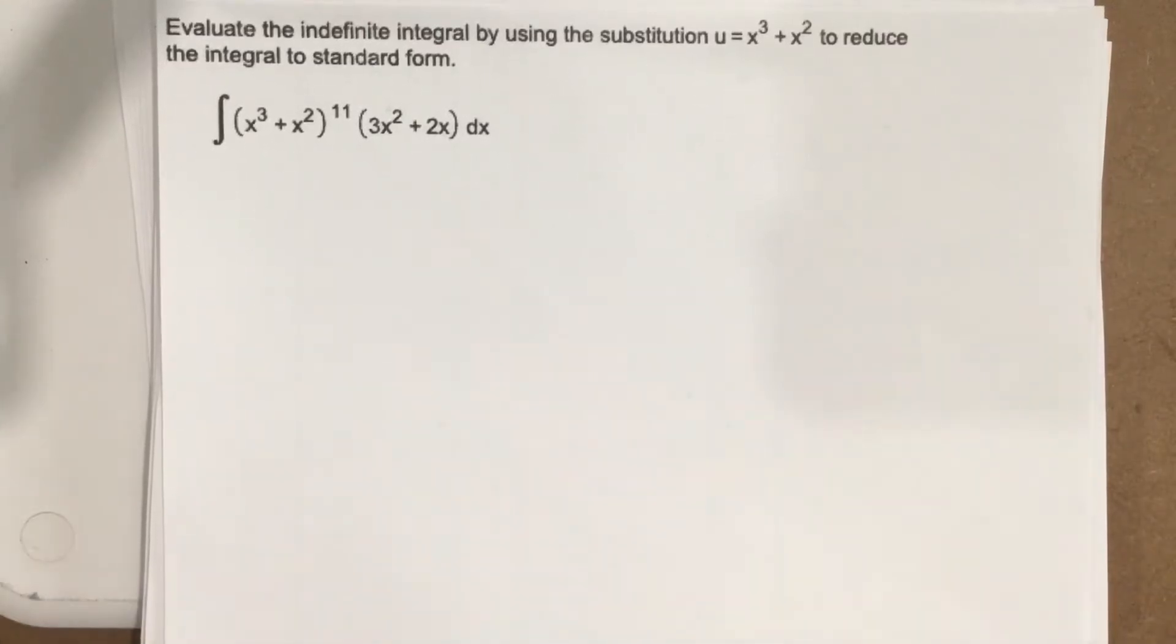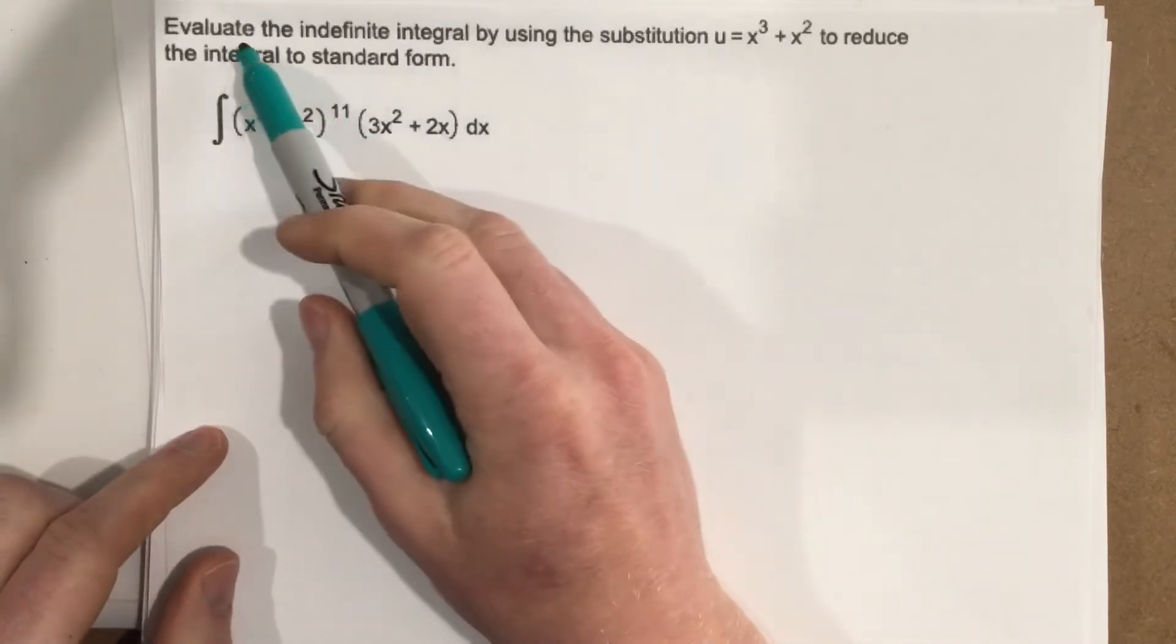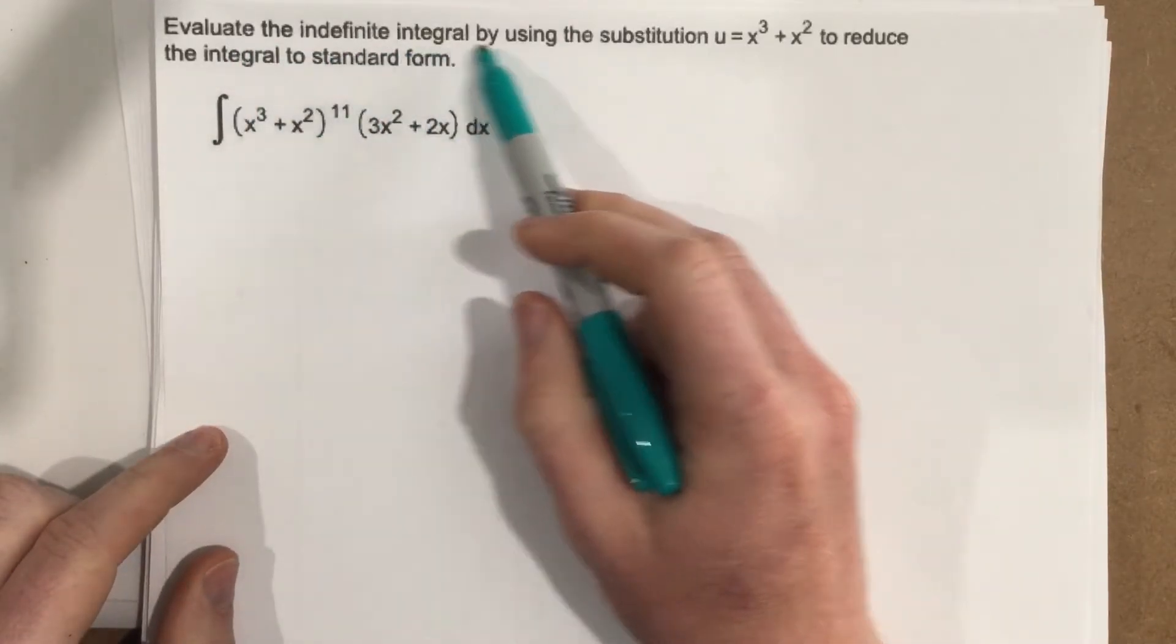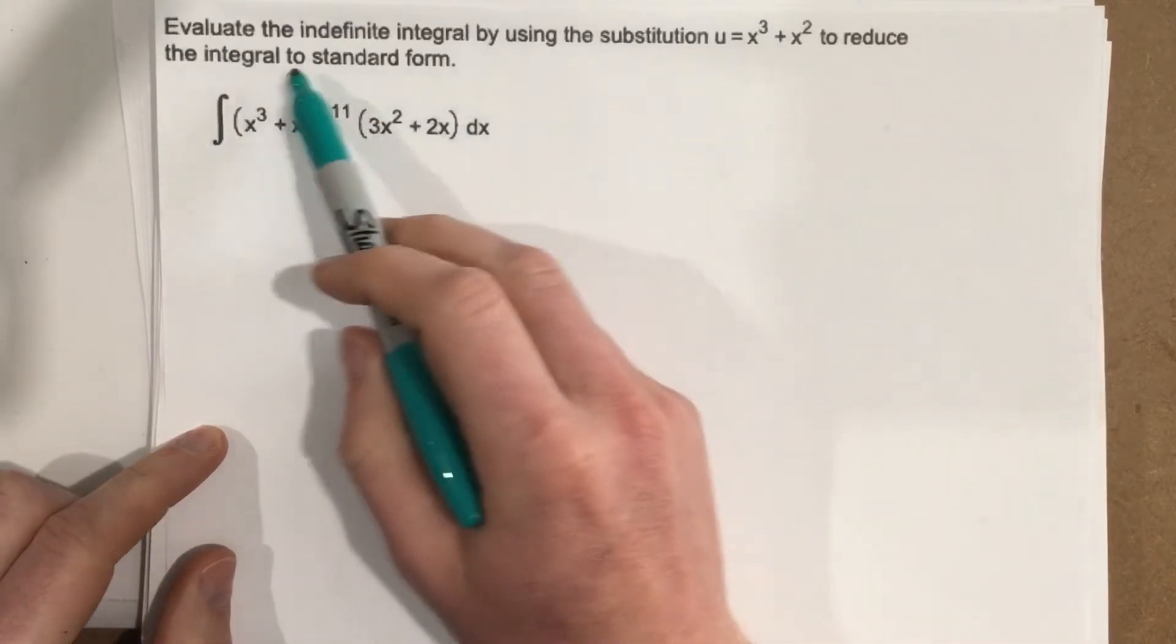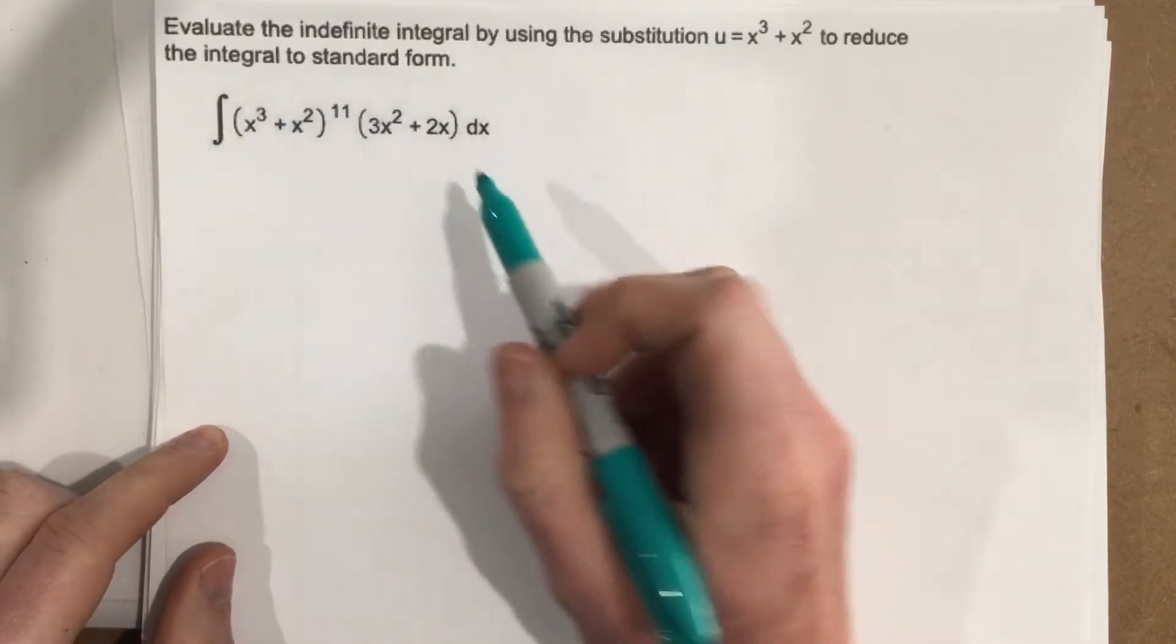This is problem number two from section 5.5. They give us a u substitution that says evaluate the indefinite integral by using the substitution u equals x cubed plus x squared to reduce the integral to standard form.